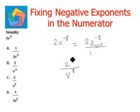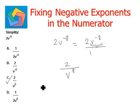So 2 will remain on top and v to the power of 8 will go to the denominator and become positive. Option C is the correct answer.